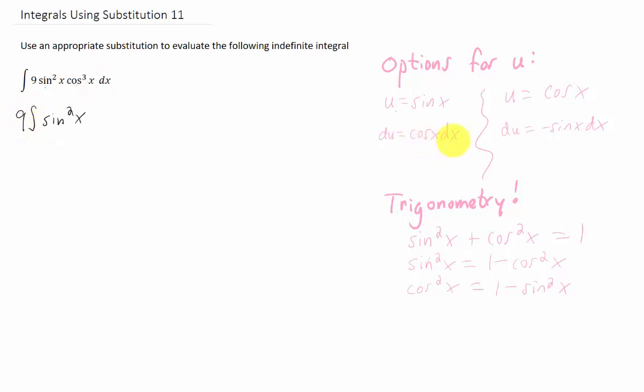Since our du is cosine of x dx, let's write this with a cosine of x dx in it. And you'll now notice that we have a u squared right here. We have a du right here, but we have this random cosine squared of x floating around. Well, we know that we can use this identity right here to rewrite this middle term. And not just for the sake of rewriting it, but because of the fact that when we do rewrite this term as 1 minus sine squared,